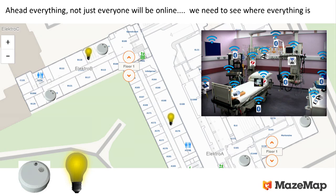In a large hospital, you have the highest concentration of connected devices. A lot is happening now with equipment tracking. We have one customer doing indoor navigation as well as equipment tracking and alarms in a mental health part of the hospital — they want to trigger alarms and show guards exactly where the alarm is. That's one of the great things about having a map engine: you can show the exact position of where things are, and with integration towards Cisco, you can pinpoint exactly where that is.